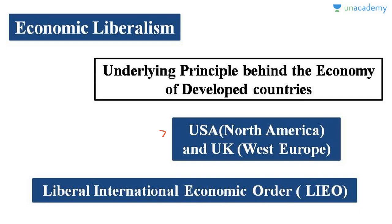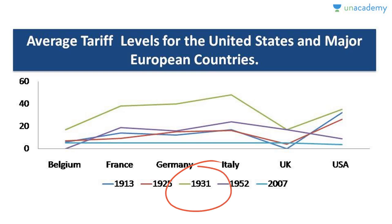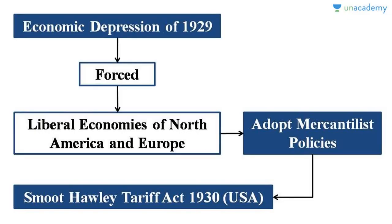Something strange happened in the year 1931 — the average tariff level for the United States and major European countries rose quite high. The reason was the great economic depression that struck the world in 1929. This economic depression caused widespread unemployment and brought down the growth rate to very low levels.